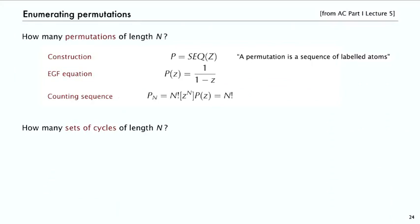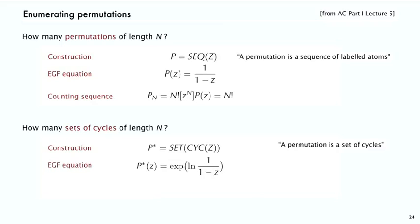From the point of view of analytic combinatorics, we can use combinatorial constructions to count permutations. Permutations is a sequence of labeled atoms; its generating function is one over one minus z by the transfer theorem. If we didn't know the bijection and wanted to count sets of cycles, we could use the construction that P is a set of cycles of atoms. The transfer theorem immediately says cycles of atoms gives log of one over one minus z, and sets of that gives e to that power. Well, e to the log of one over one minus z is just one over one minus z — a different way of getting the same generating function.